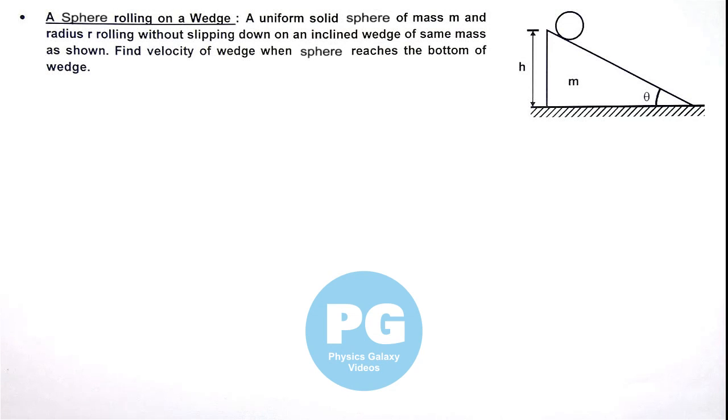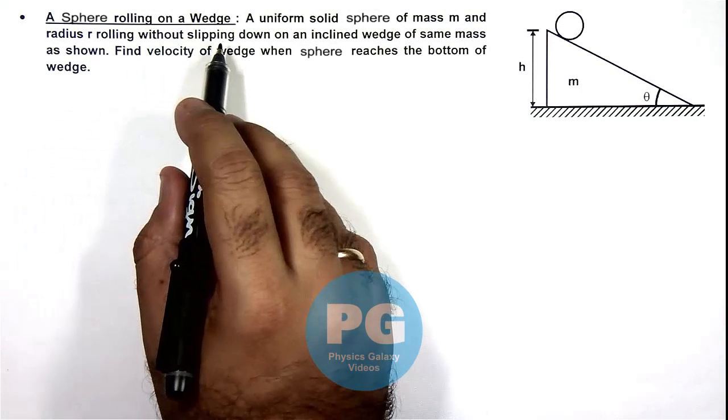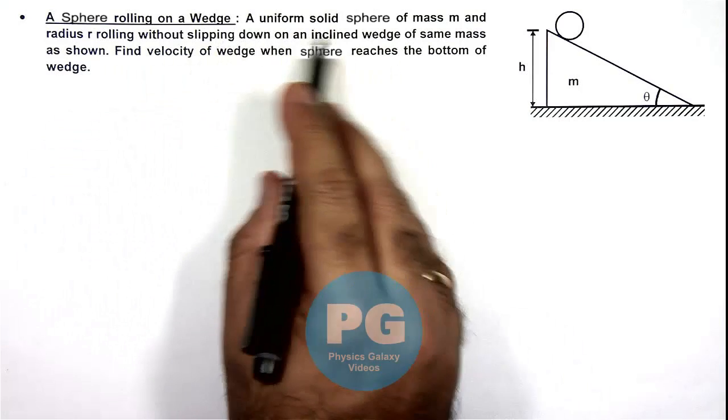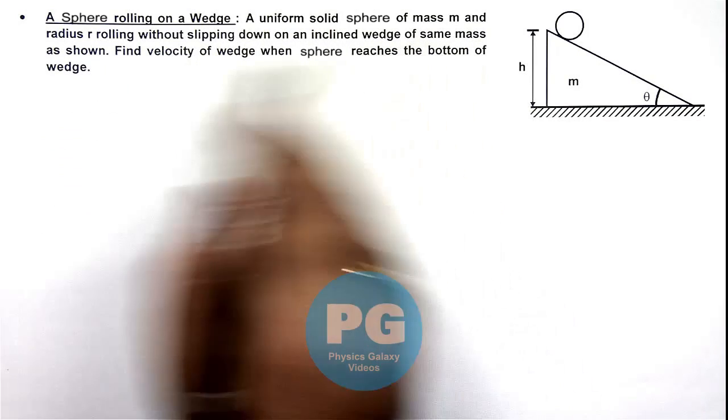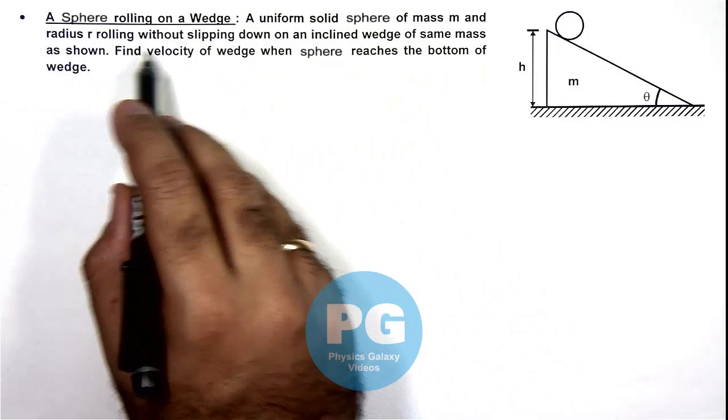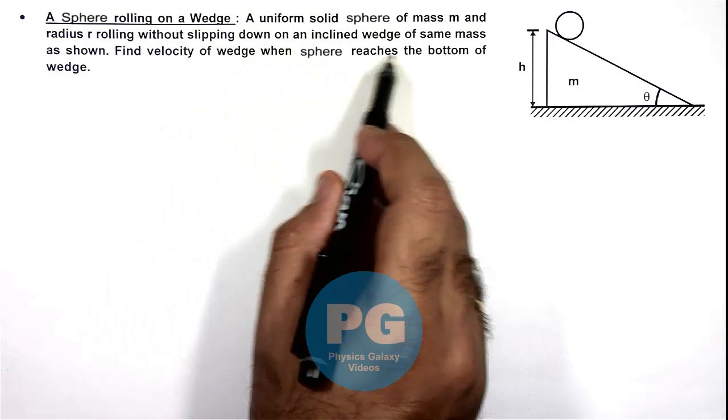In this illustration we'll analyze a sphere rolling on a wedge. We are given that a uniform solid sphere of mass m and radius r rolling without slipping down on an inclined wedge.